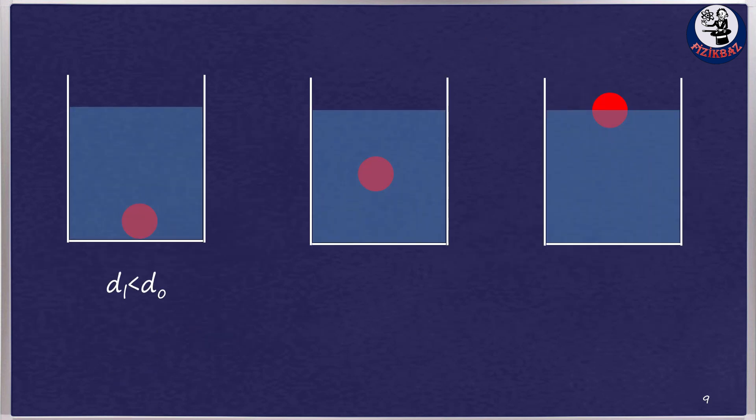If the density of an object is greater than the density of the liquid, it will sink to the bottom when it is released into that liquid. If the densities of the liquid and the body are equal, the object hangs in the liquid. If the density of the object is less than the density of the liquid, the object will float on the surface of the liquid.